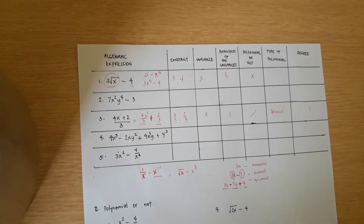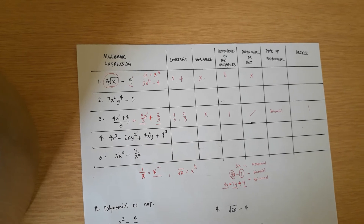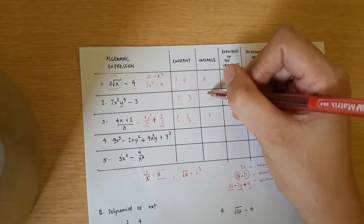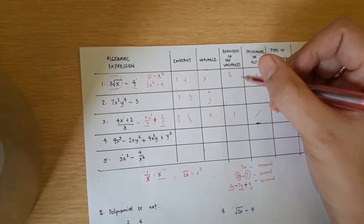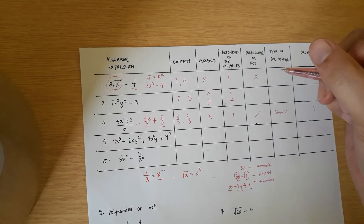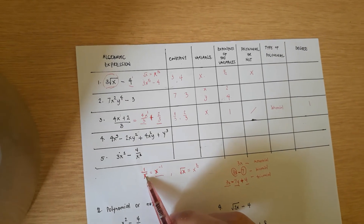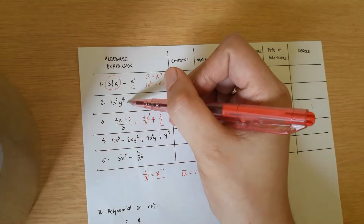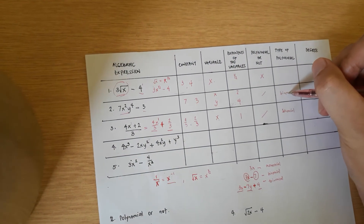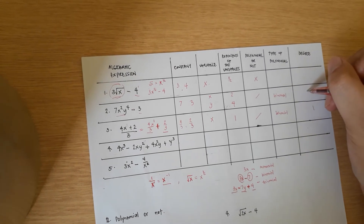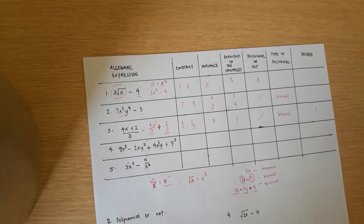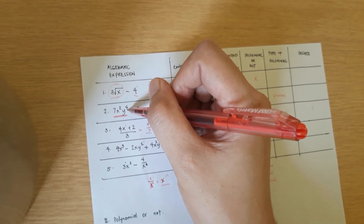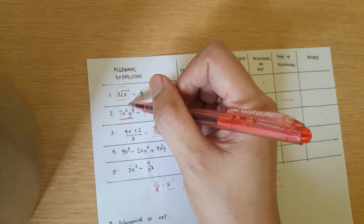For number 2, the constants are 7 and 3, and the variables are x and y. The exponent of x is 2 and the exponent of y is 4. This is a polynomial — no variable in the denominator, no radical sign. It's a binomial since it has 2 terms. When a term has two variables, you add their exponents together to find the degree of that term: 2 + 4 = 6, so the degree is 6.